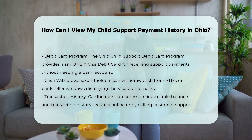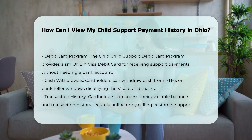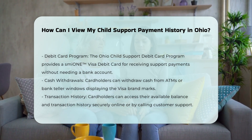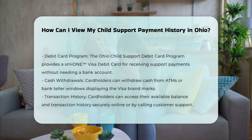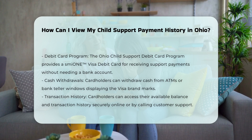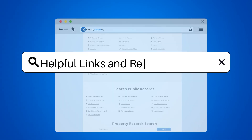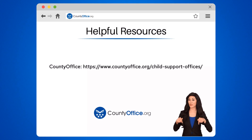Additional assistance: if you encounter any issues or need assistance, you can contact your local child support agency. For example, in Cuyahoga County, you can call 216-443-5100 or 1-800-686-1556 for help. To learn more, check out these links, which you can click in the description below.